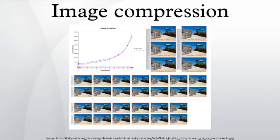Methods for lossless image compression are: run-length encoding used as default method in PCX and as one of possible in BMP, TGA, TIF, area image compression, DPCM and predictive coding, entropy encoding.